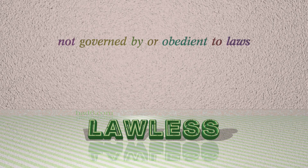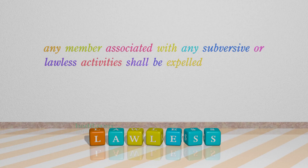Number 7: Lawless — which means not governed by or obedient to laws. For example: Any member associated with any subversive or lawless activities shall be expelled.